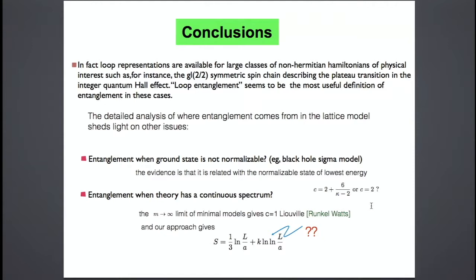Conclusions: it may look like what I've discussed is specialized and technical, but in fact it's not. To a very large extent, all the non-Hermitian Hamiltonians we are interested in these days do have some sort of geometrical representation like the one I discussed, or are related to supergroup symmetries. The transition between plateaus in the ordinary quantum Hall effect is related to GL(2|2), for instance. You can apply these modified definitions of entanglement — adapted to the non-unitary case — to get non-trivial results for theories which all have central charge zero formally.